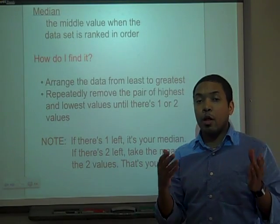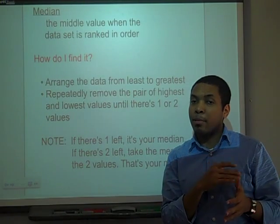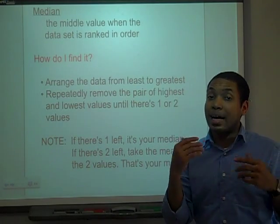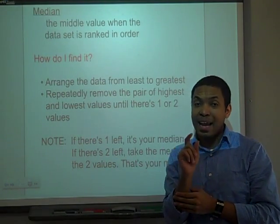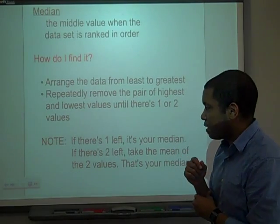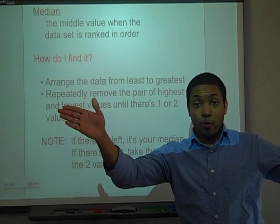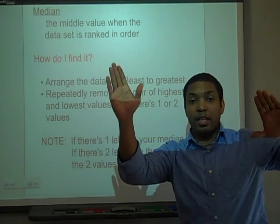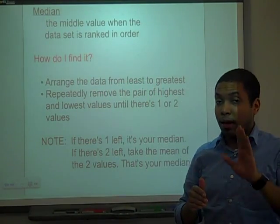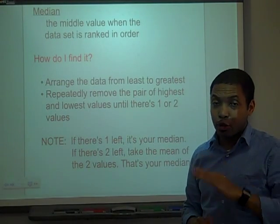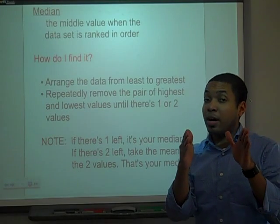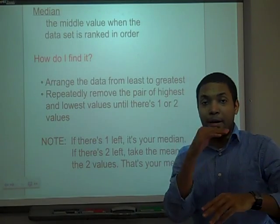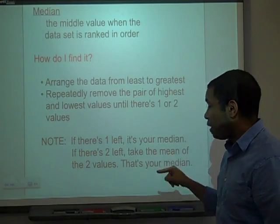But if there are two numbers left — and you'll only get two numbers left if you have an even number of values — then you are going to find the mean of those two numbers, and that will give you the median. To summarize: arrange the data from least to greatest, cross off the lowest and highest in pairs until you're left with one or two numbers. If two remain, add them and divide by 2.